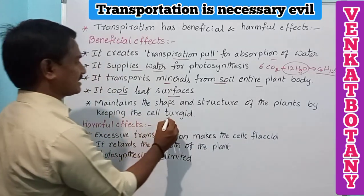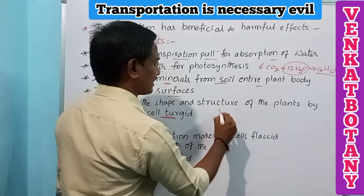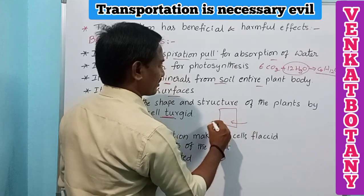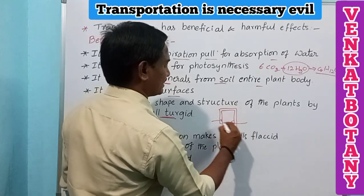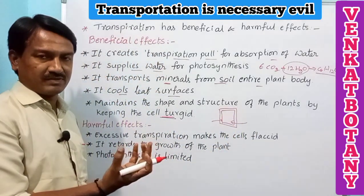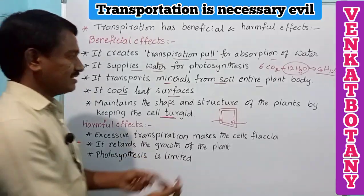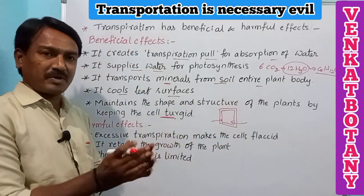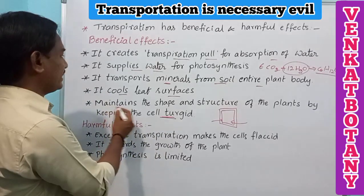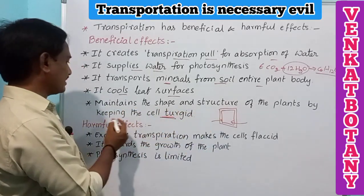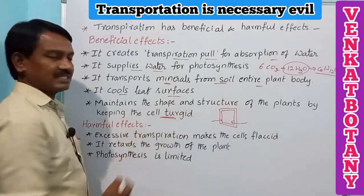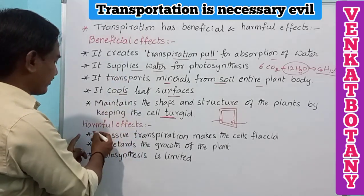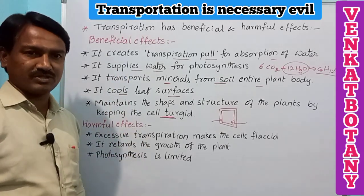The next beneficial effect is that transpiration maintains the shape and structure of the plants by keeping the cells turgid. Along with these beneficial aspects, there are also harmful effects.